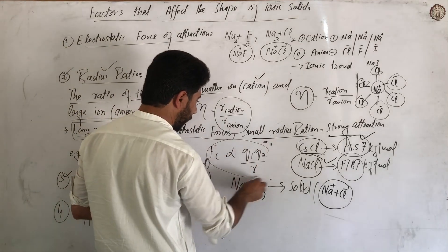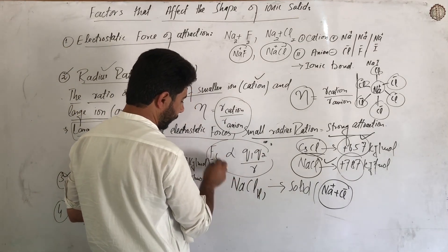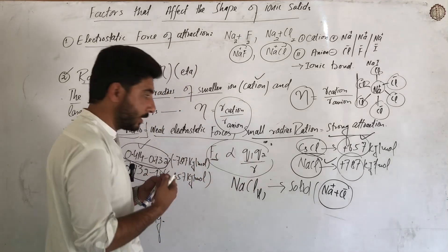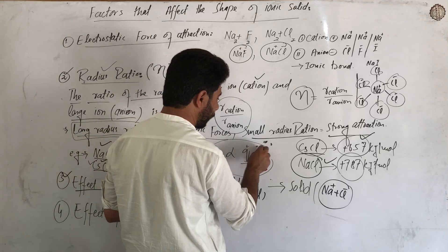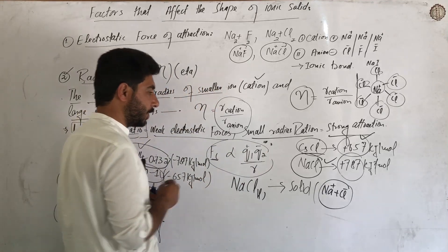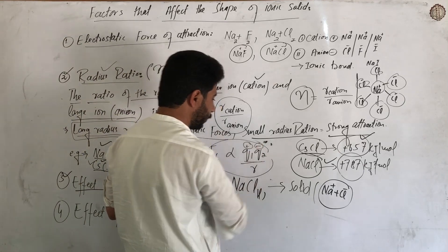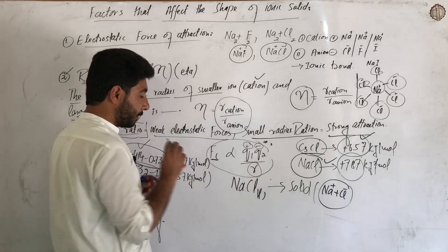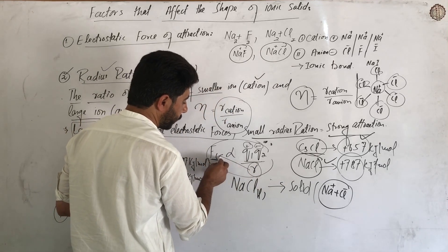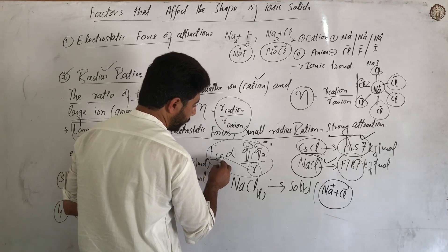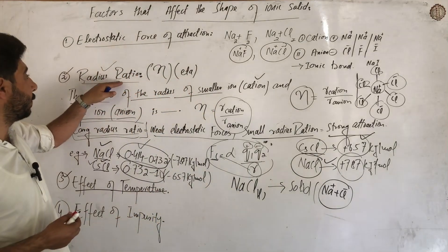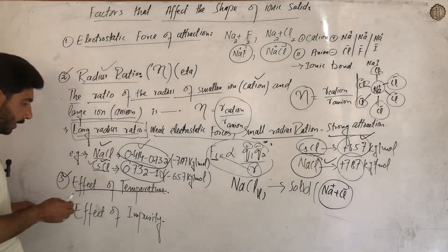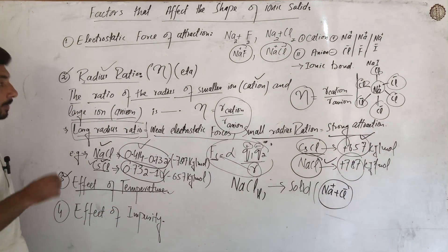The second point regarding force of attraction: force of attraction has a direct relation with the positive and negative charges - that is, with the charge on the cation and anion. It has an inverse relation with the radius - so if the radius increases, the force of attraction decreases. This is basically Coulomb's law applied to ionic solids.